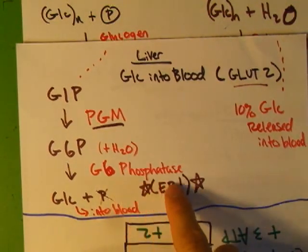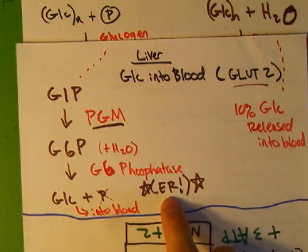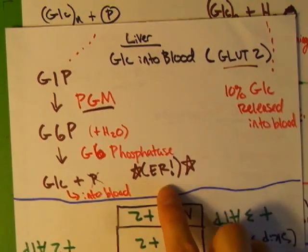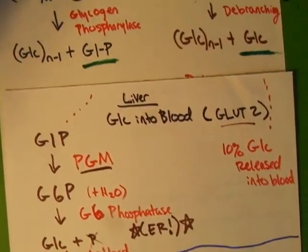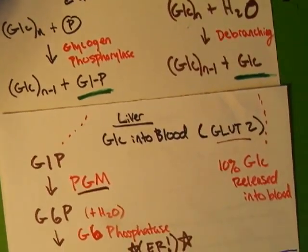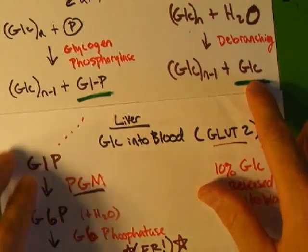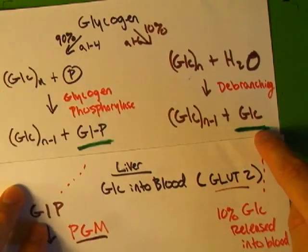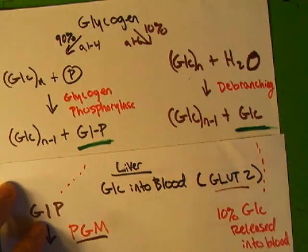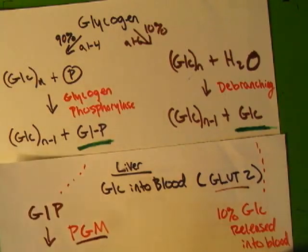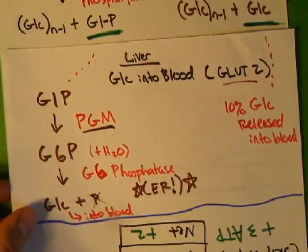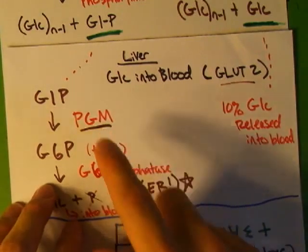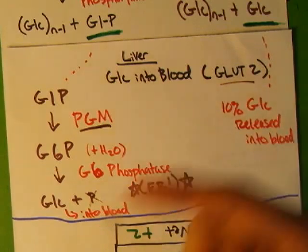But the important thing to know about glucose 6-phosphatase is that it's the endoplasmic reticulum enzyme. It's membrane-bound to the ER. The other side is much easier. You've already gotten glucose as a product, and because you have glucose, it's just released straight into the blood. That's the end goal - to release free glucose. So from the linear side, there's just an extra step with the glucose 6-phosphatase. And remember phosphoglucomutase because this is going to be the one enzyme that's used in both degradation and synthesis.